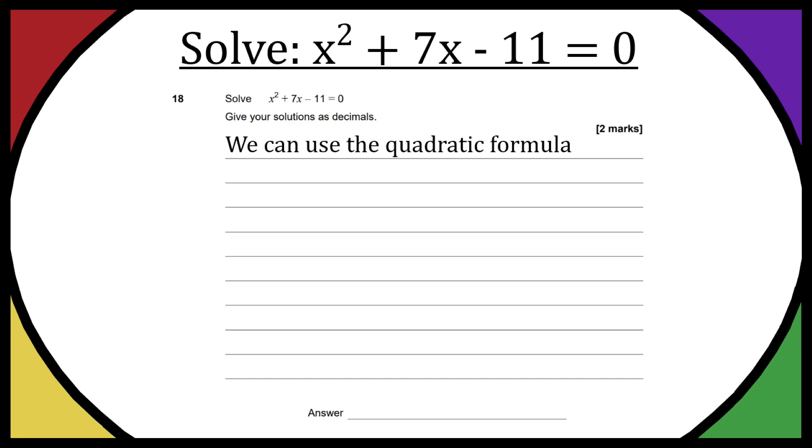The quadratic formula will give you the two solutions to this equation. It is x = (-b ± √(b² - 4ac)) / 2a, and this can be used where ax² + bx + c = 0.